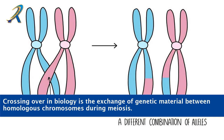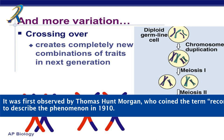Crossing over in biology is the exchange of genetic material between homologous chromosomes during meiosis. It was first observed by Thomas Hunt Morgan, who coined the term recombination to describe the phenomenon in 1910.